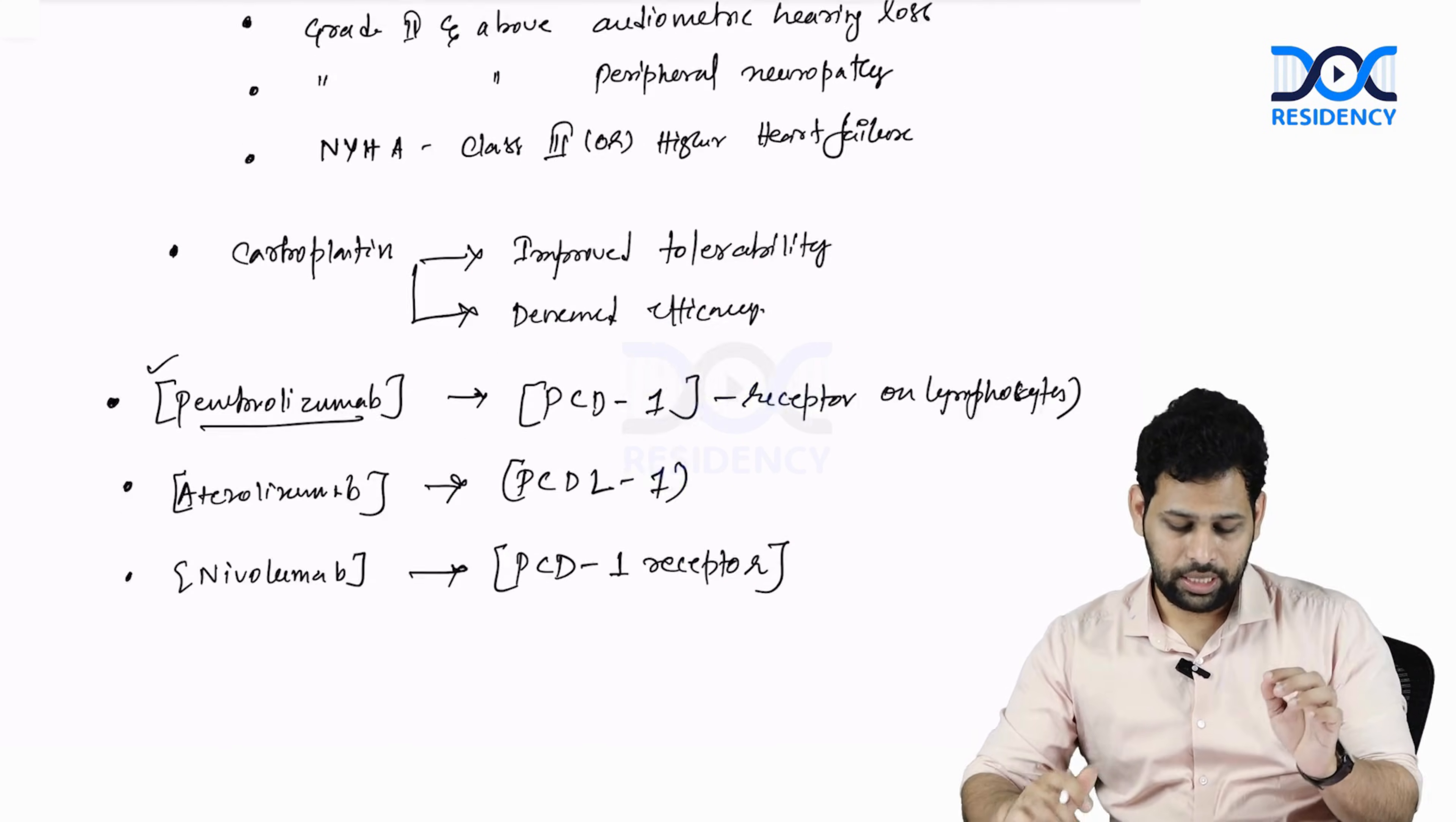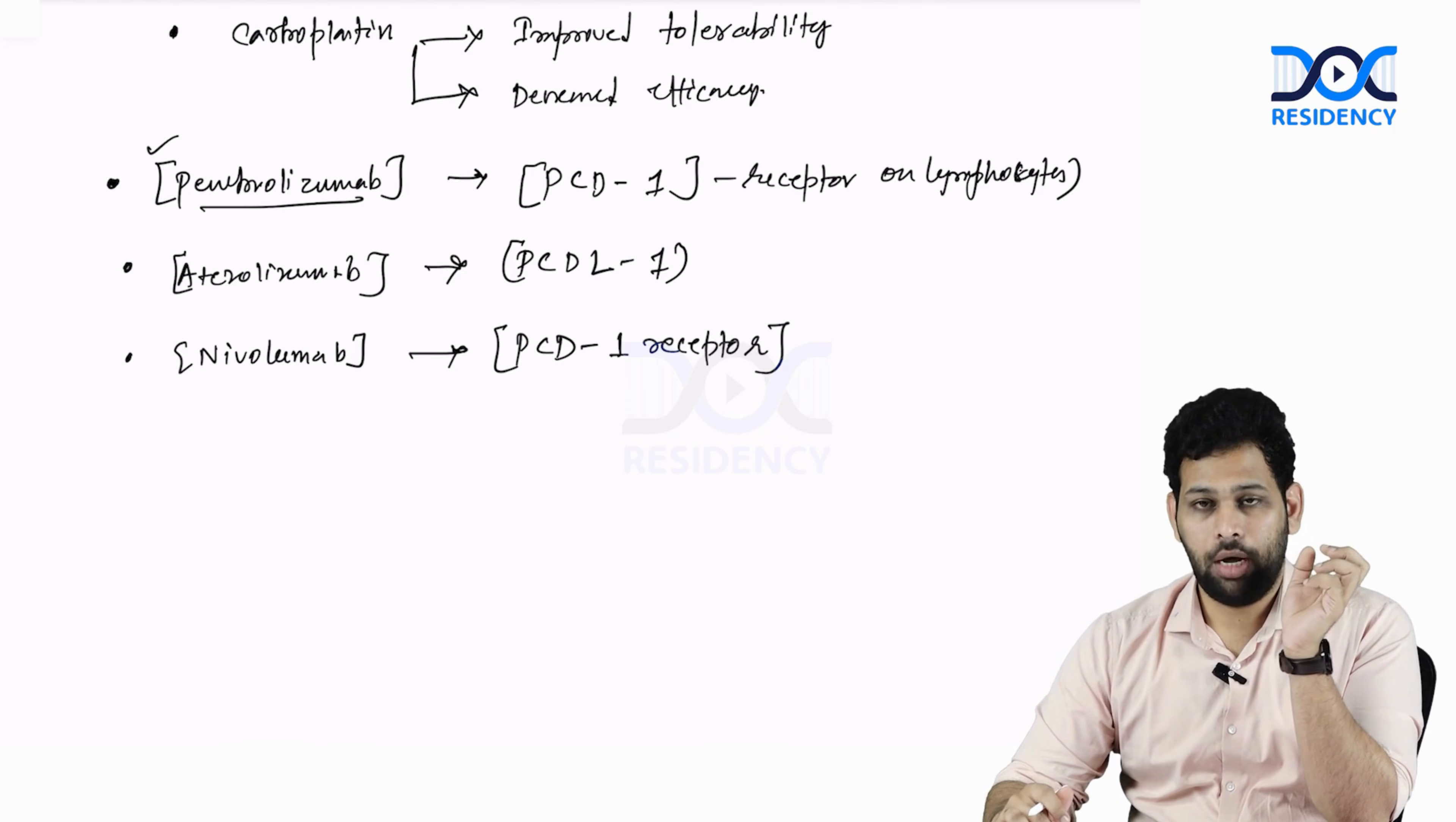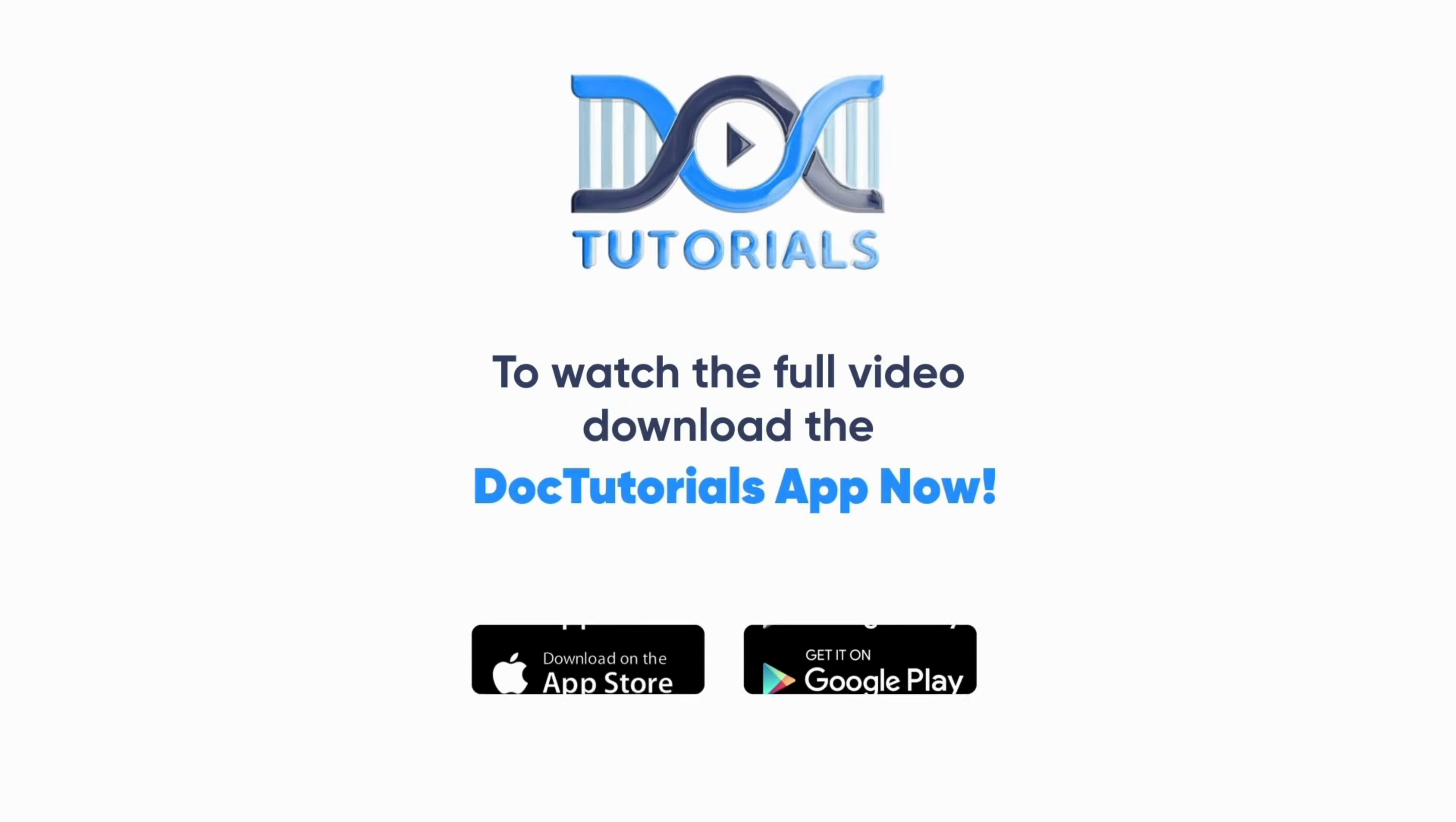These are the other drugs that can be used in case of metastatic bladder carcinoma other than chemotherapeutic drugs. You can go for Pembrolizumab, Atizolizumab, and Nivolumab.